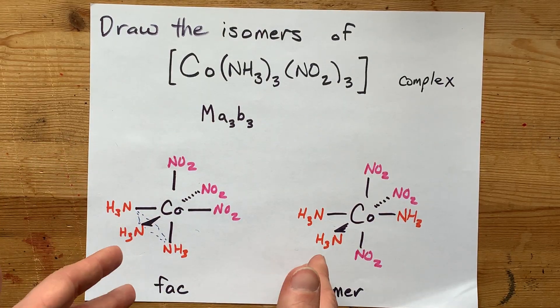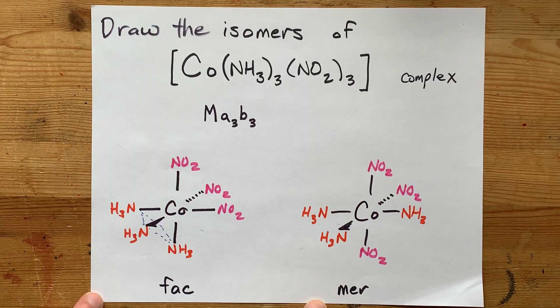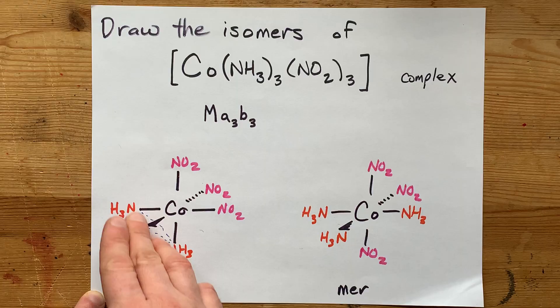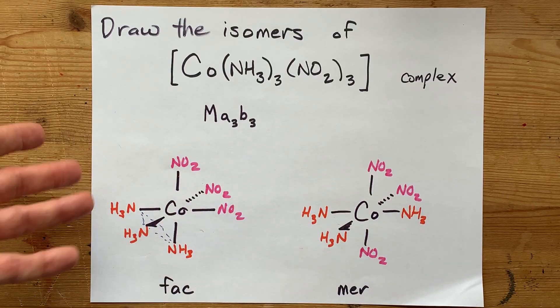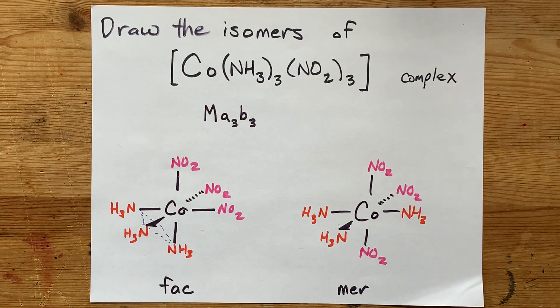You can always just memorize it and draw in these ways, but it's beautiful to me that what we call the FAC isomer happens to draw a face of the octahedron. So there you go. Thanks for being with me, and best of luck.